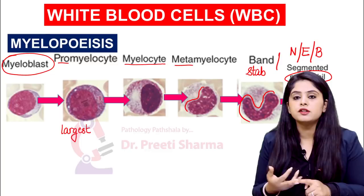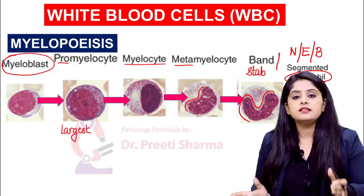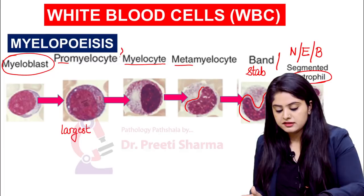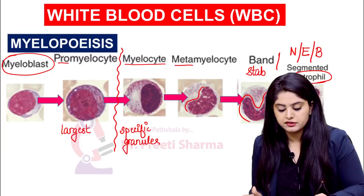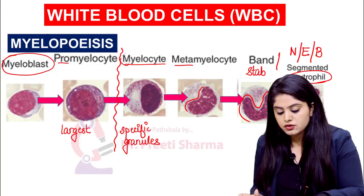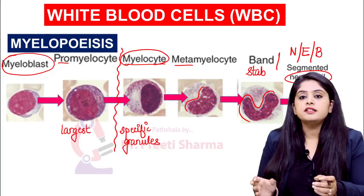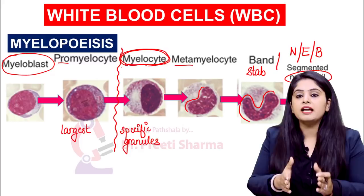Eosinophils have granules, basophils have granules, neutrophils have granules — all of them will come from this particular series. Where in this series is it decided whether the series is going towards a neutrophil, eosinophil, or basophil? At the stage of a myelocyte — that is where the specific granules will appear. If this series has to end as an eosinophil, at the myelocyte stage those orange-pink granules will start coming. If it has to end in a basophil, those blackish granules start appearing at the myelocyte stage and onwards.